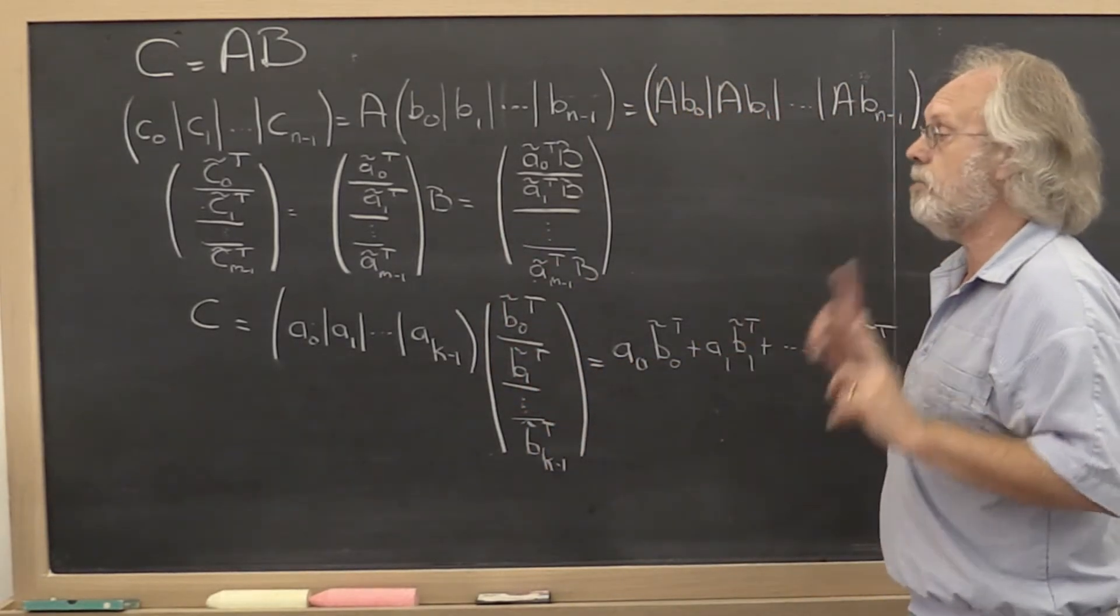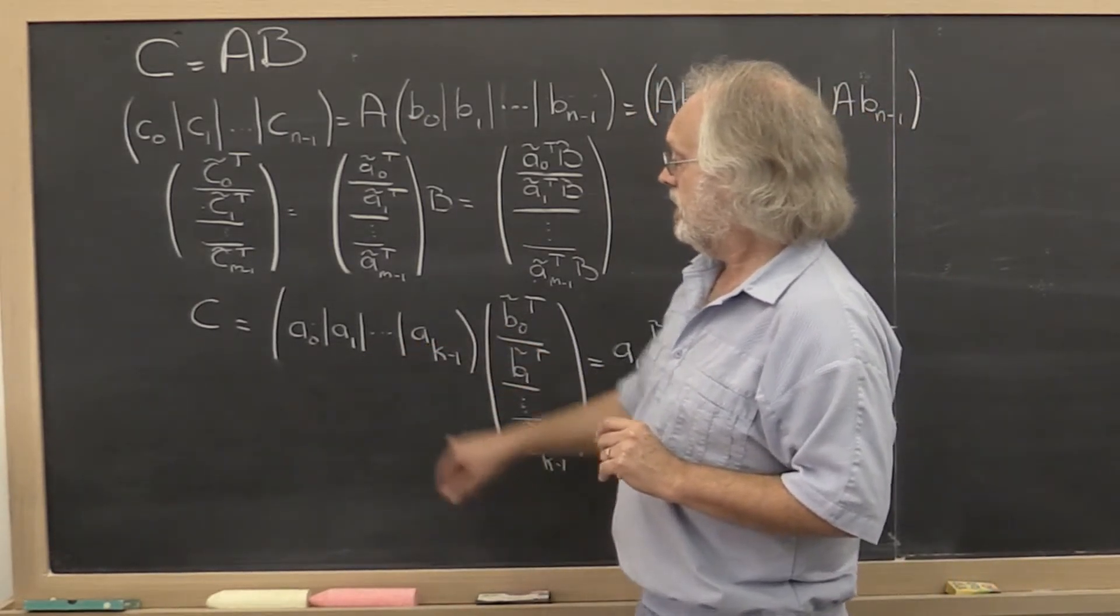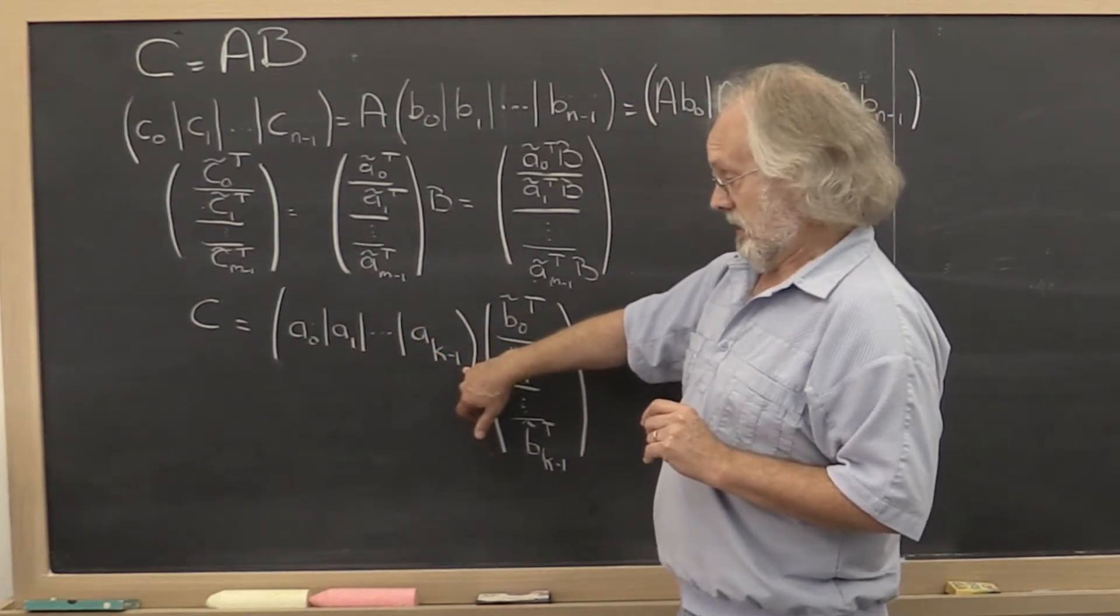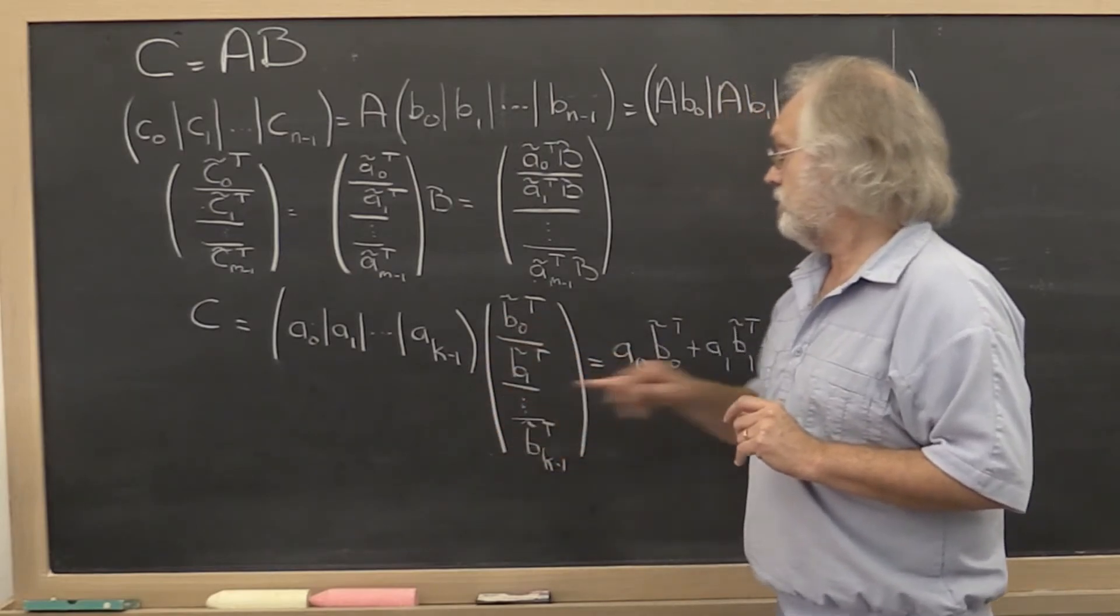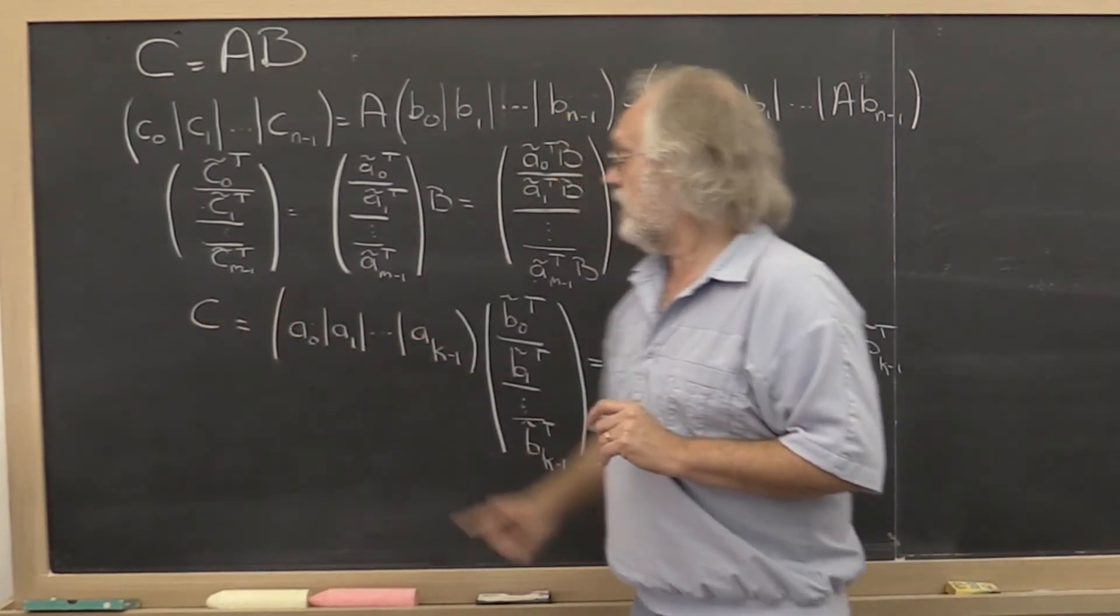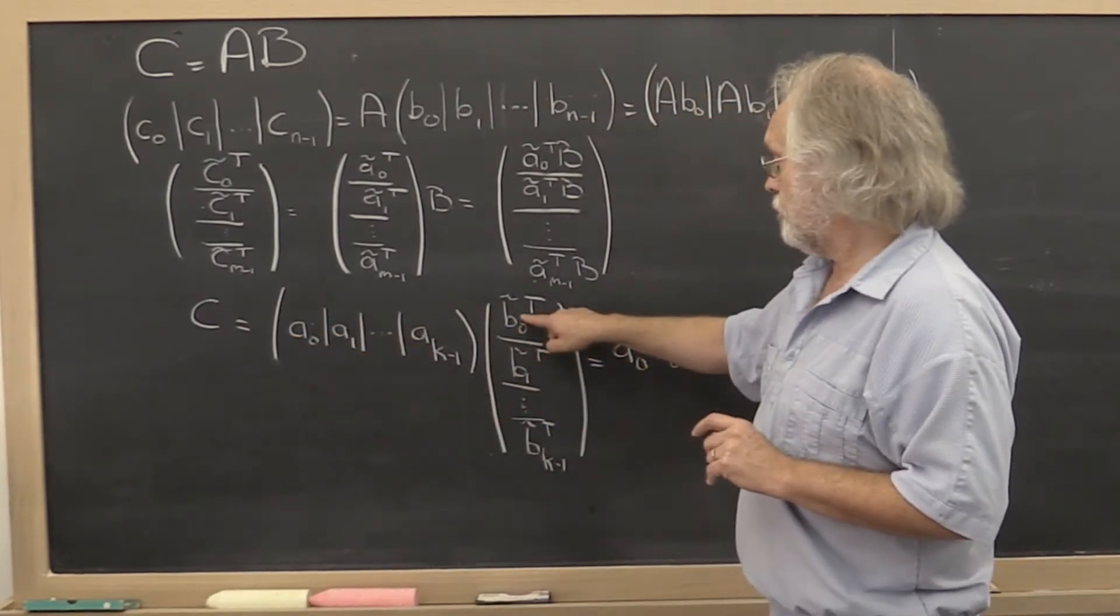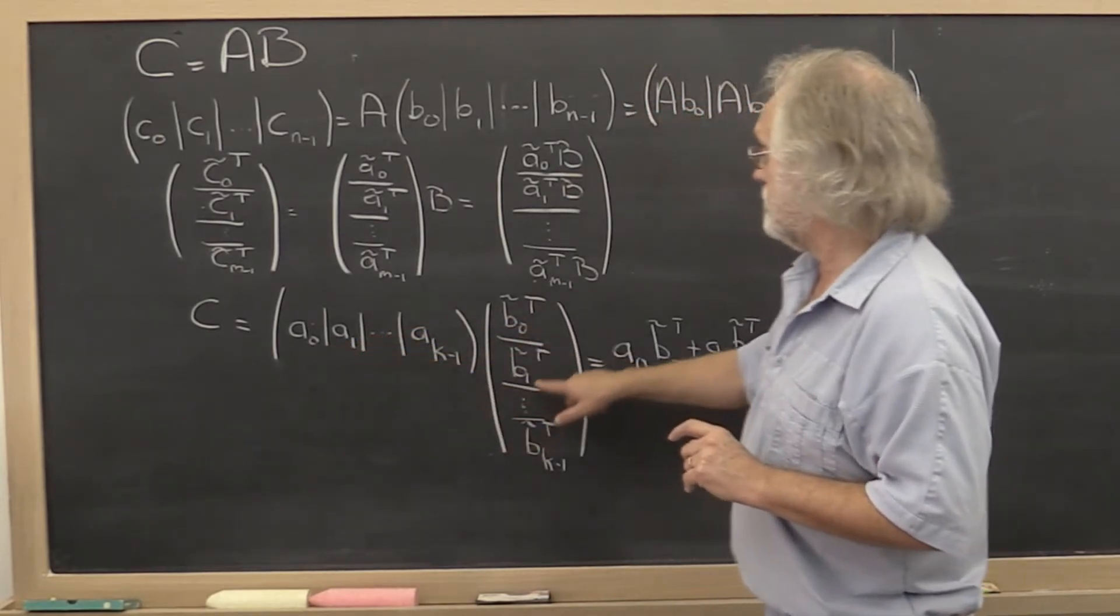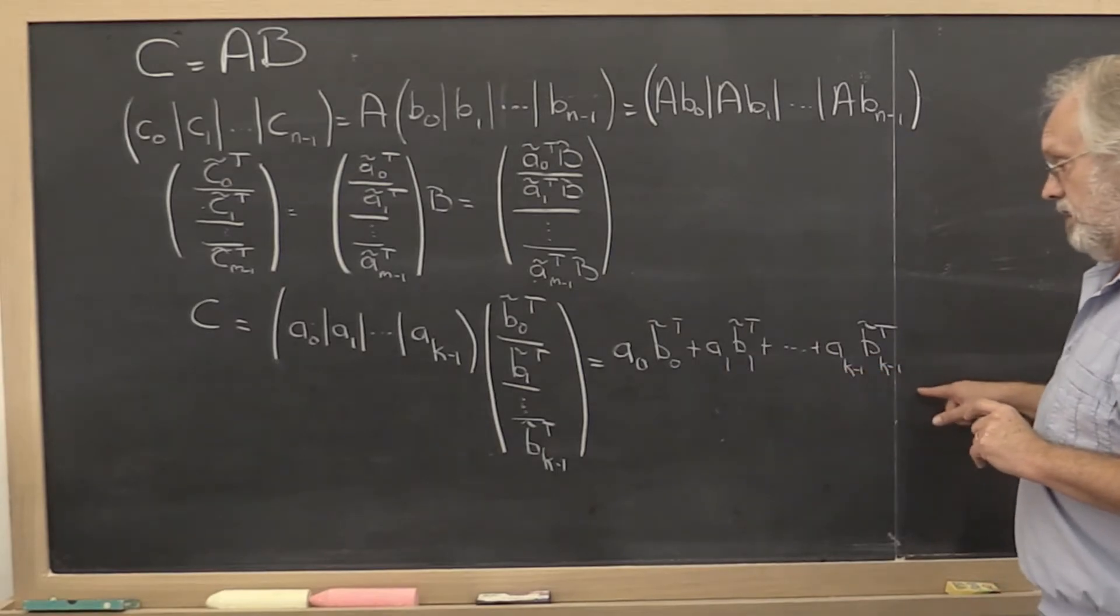Finally, a very important way of looking at matrix-to-matrix multiplication is to say let's partition the matrix A by columns. Let's partition matrix B by rows. And then matrix C can be computed as the first column of A times the first row of B plus the second column of A times the second column of B and so forth. And that's what we've written here.